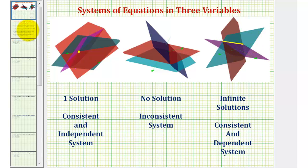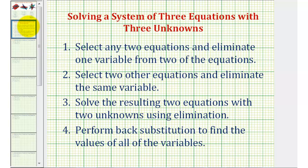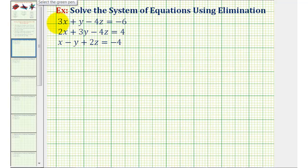Before we solve our system, let's review the elimination method. The first step is to select any two equations and eliminate any one of the variables. Then we'll select two other equations and eliminate the same variable again. This gives us two equations with two unknowns, which we'll solve using the elimination method, then perform back substitution to solve for all variables. Let's label the equations A, B, and C to stay organized.